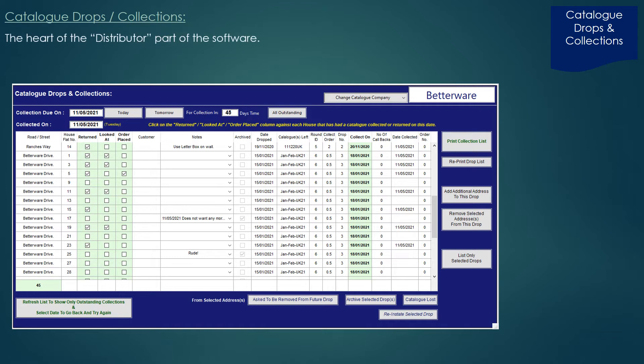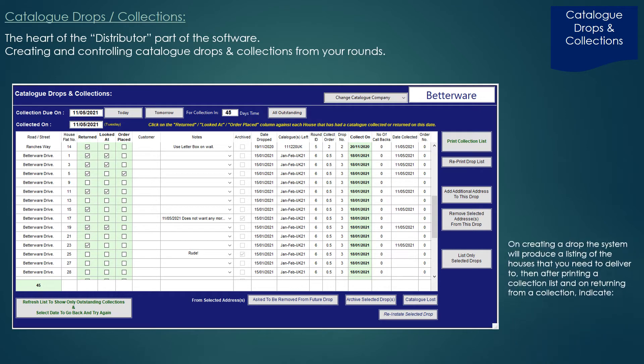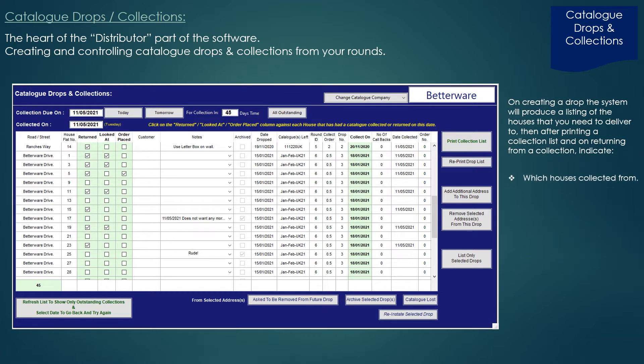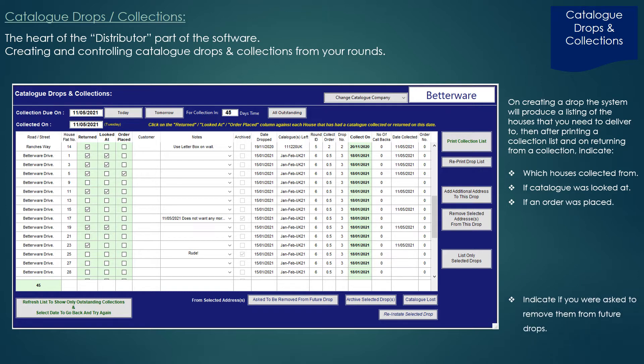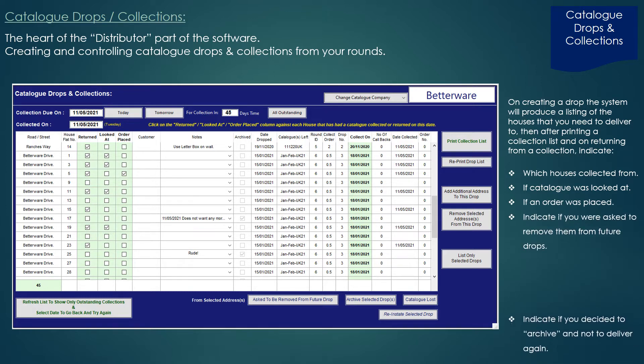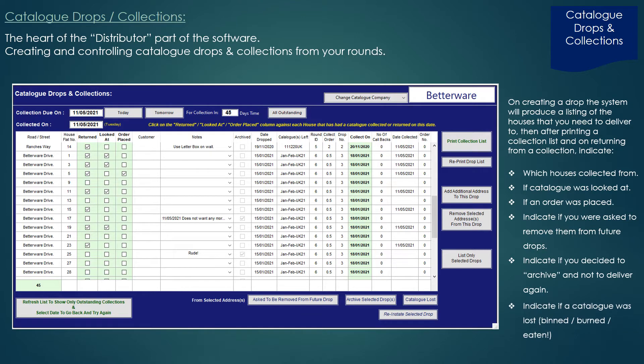Catalogue drops and collections — this is the heart of the distributor part of the software, where we create and control catalogue drops and collections from your rounds. This screen will show you which houses you've collected from, if a catalogue was looked at, if an order was placed, if you were asked to remove them from future drops, if you decided to archive and not drop to them again, if a catalogue was lost, binned, burned, or whatever excuse they give you for not returning it. By not indicating anything, the system will know that you're going to try and retrieve it at a later date.